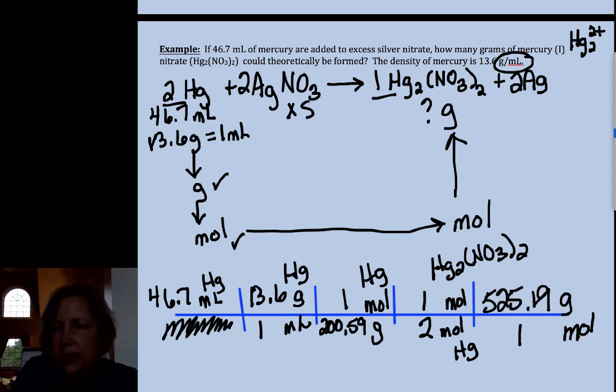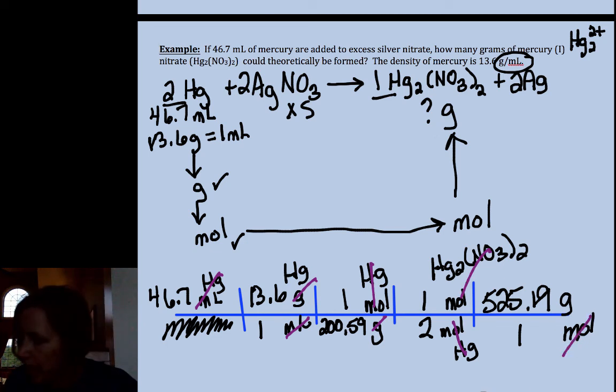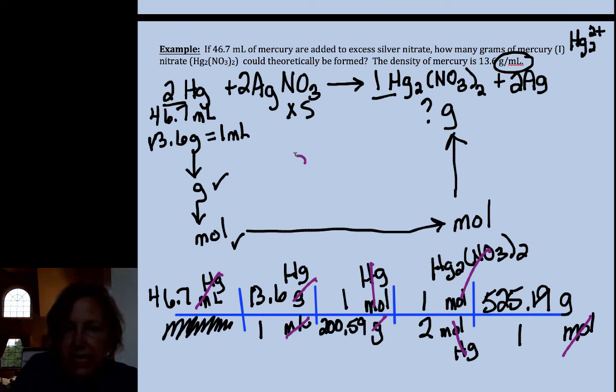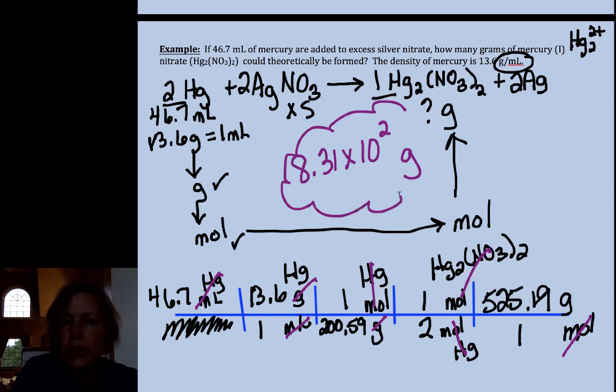Always, always, always double check that your units cancel. Grams with grams. Moles of mercury only cancels moles of mercury. Moles of mercury nitrate only cancels moles of mercury nitrate. And I get 8.31 times 10 to the second grams of my mercury one nitrate.